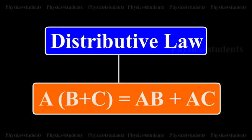Distributive law: A and (B or C) is equal to (A and B) or (A and C).